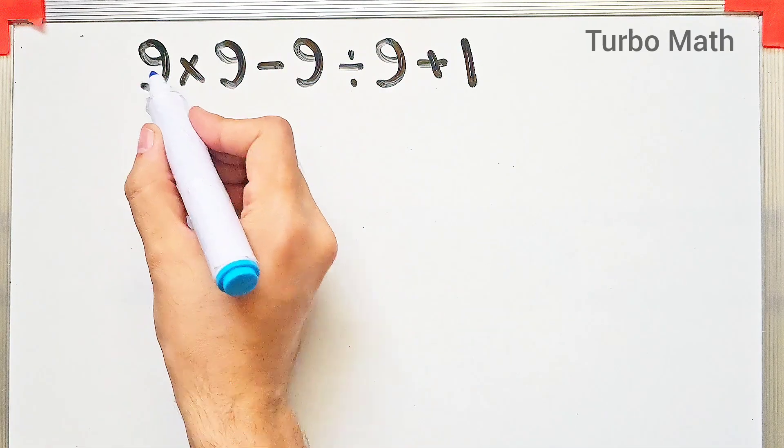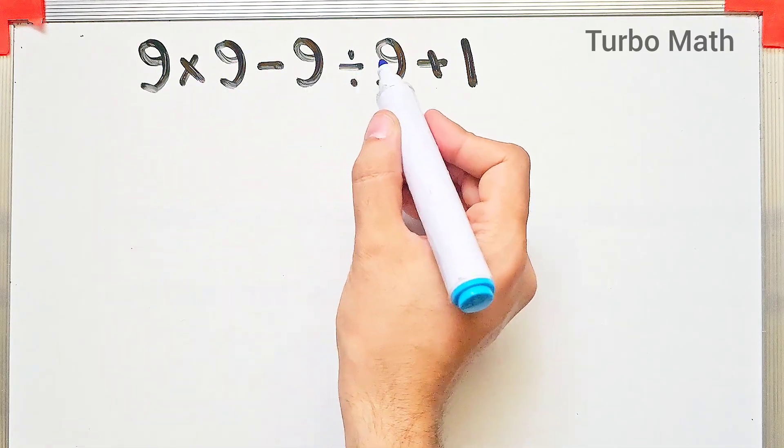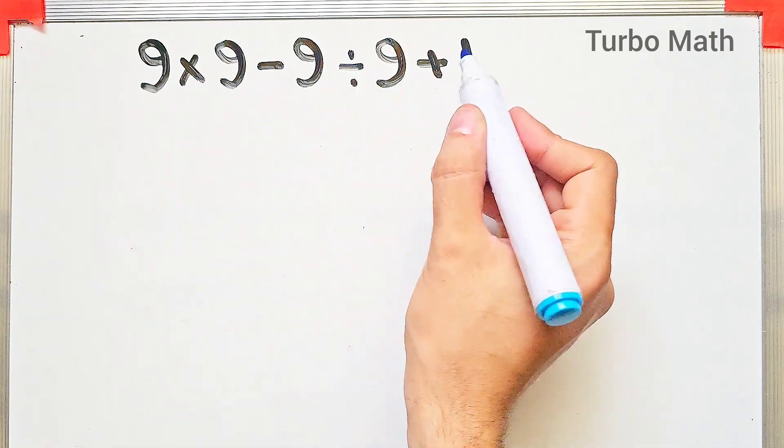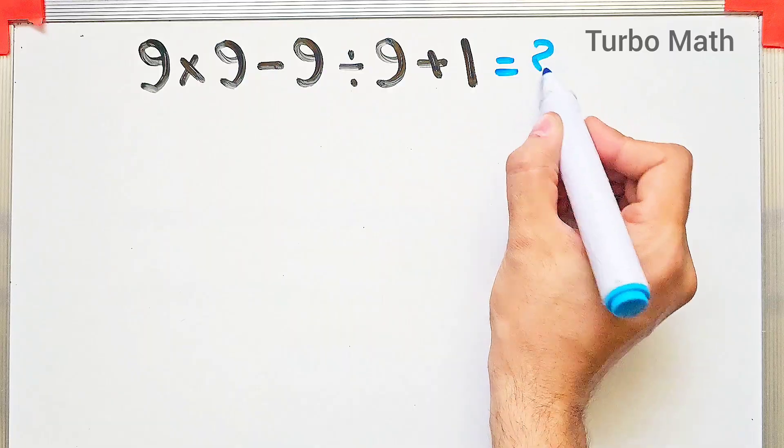9 times 9 minus 9 divided by 9 then plus 1. What is the answer to this question?